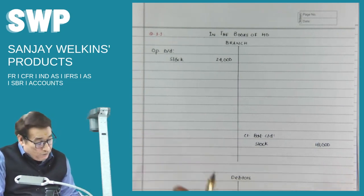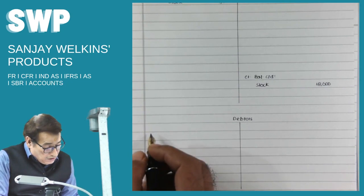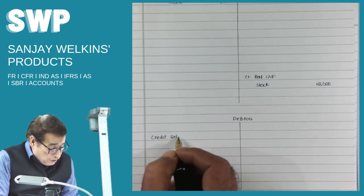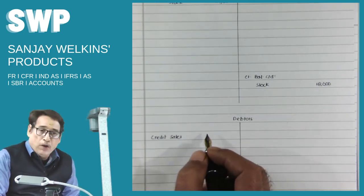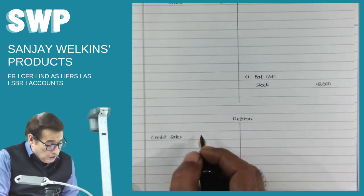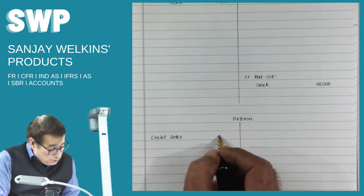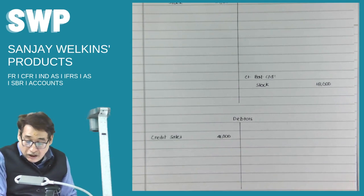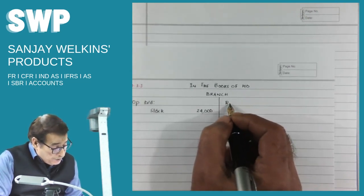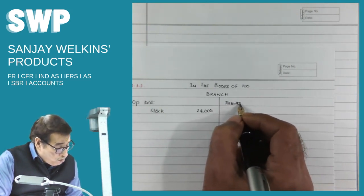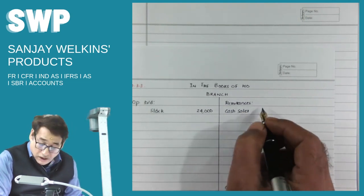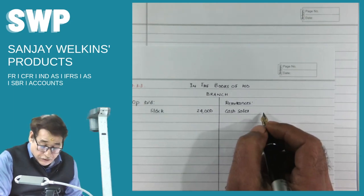Credit sales relates to the branch and debtors, so credit sales will always be written in the debtors account — it gets reflected indirectly in the branch account through the differences of opening debtors, closing debtors, and cash receipt from debtors. Credit sales is 41,000, entered in the debtors account. Cash sales is part of remittances — put towards the credit side of the branch account: 17,500.